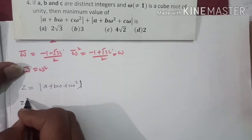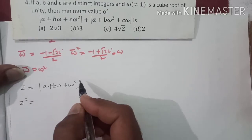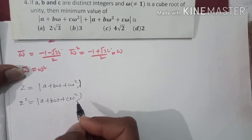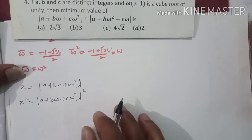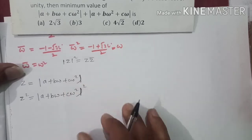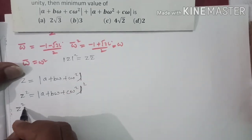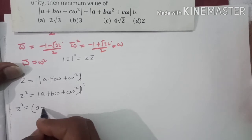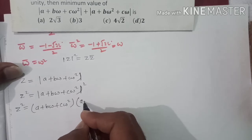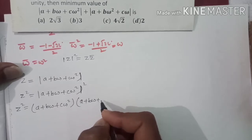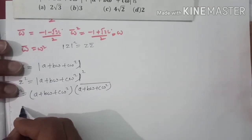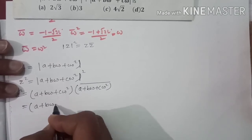Squaring کر لیتے ہیں تو z² = |a + bω + cω²|²۔ آپ کو پتا ہے کہ |z|² = z·z̄، اسی طریقے سے یہاں z² = (a + bω + cω²) × (a + bω + cω²) bar۔